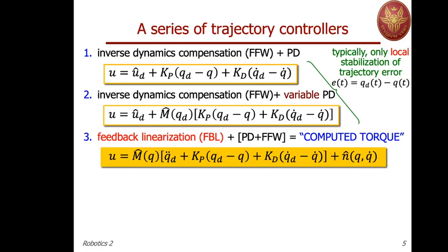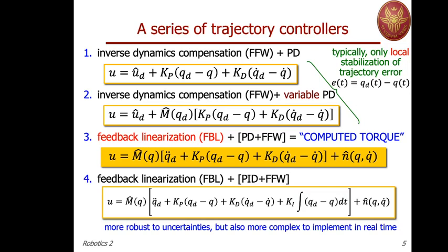This method is called computed torque; feedback linearization is the general framework, and the methodology is common across other engineering domains. A slight variation adds an integral term on the linear side of the problem after applying the linearizing feedback, giving a PID controller on the linear side. As we learned for the regulation task, integral action compensates for constant disturbances or model uncertainty, although the design becomes more complex. Option four — PID — is equivalent to option three; option three — PD with feedforward — is the most common in practice.